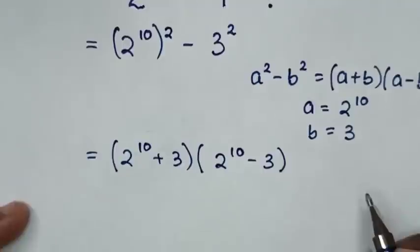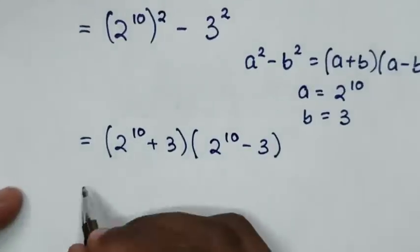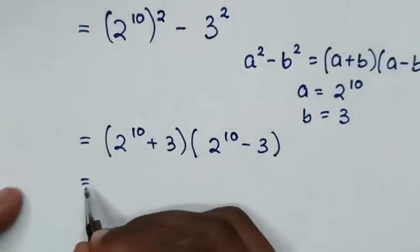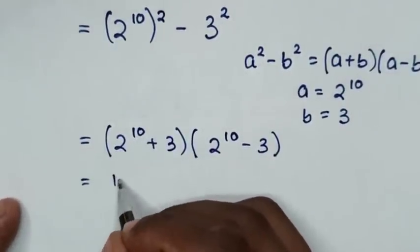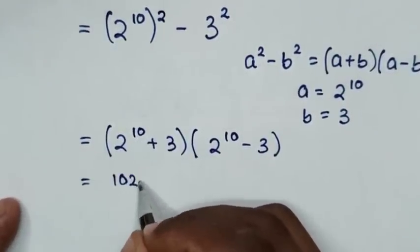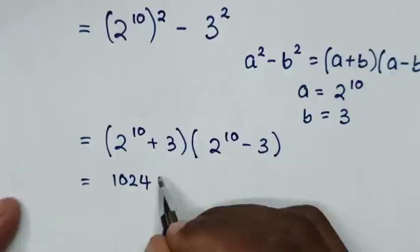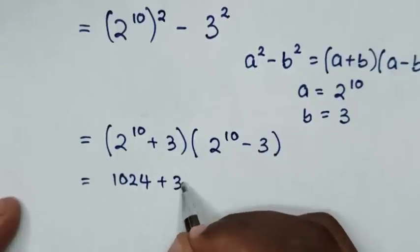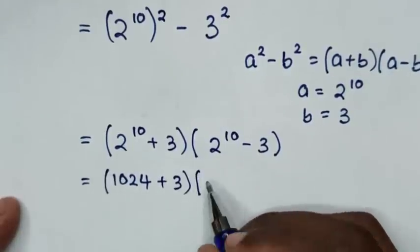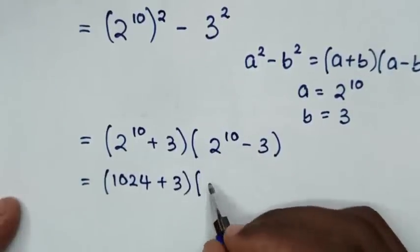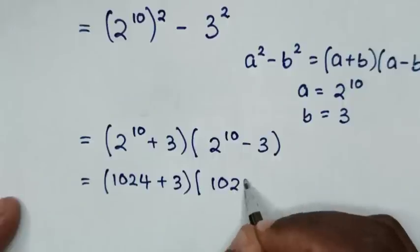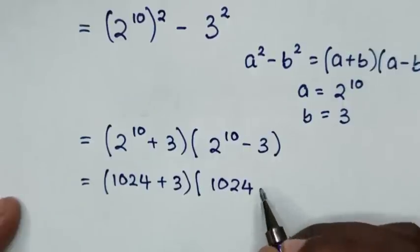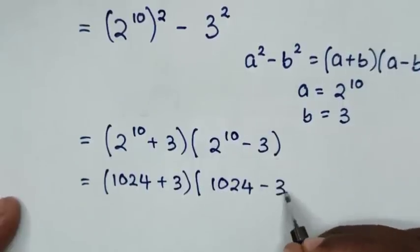Then in the next step, it will be equal to 2 power 10, which is the same as 1024. So we have 1024 plus 3, bracket times 1024 minus 3.